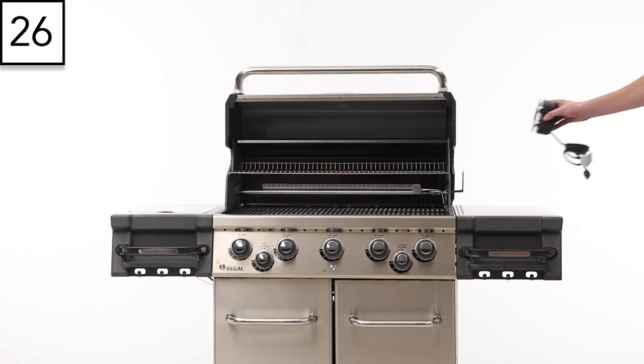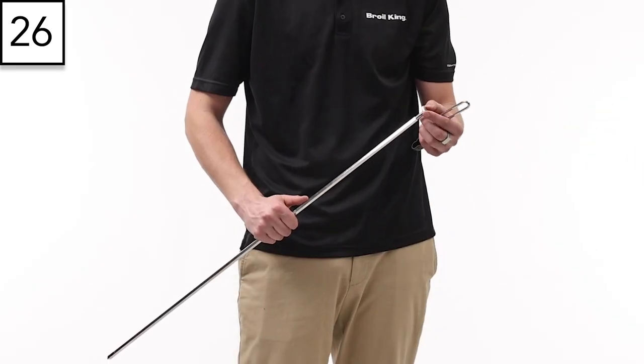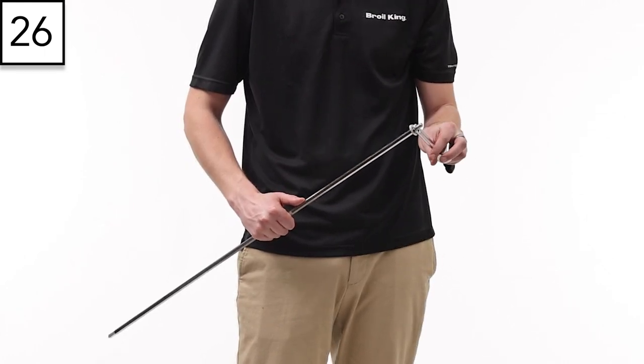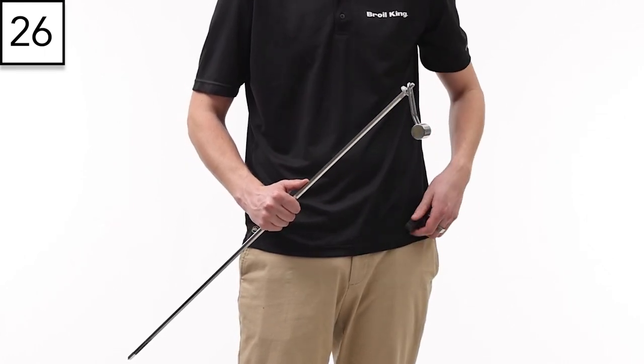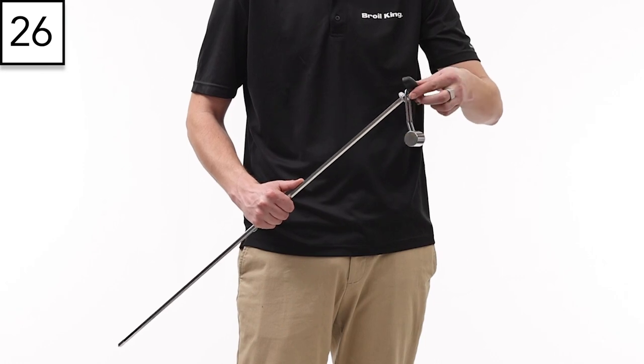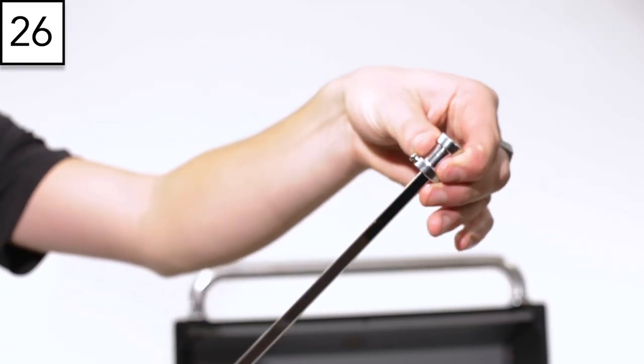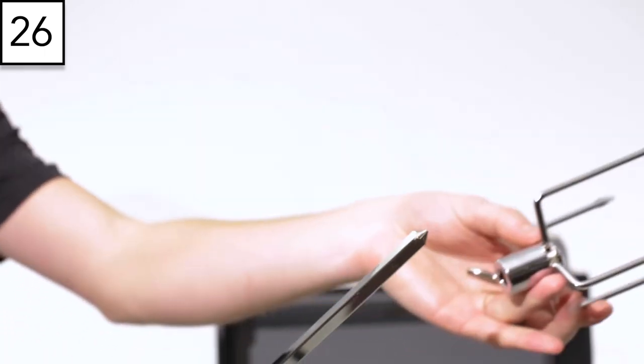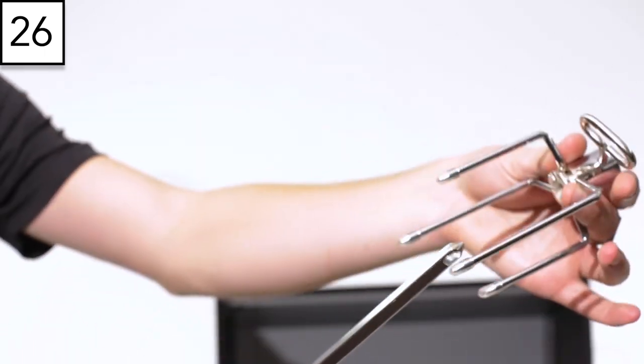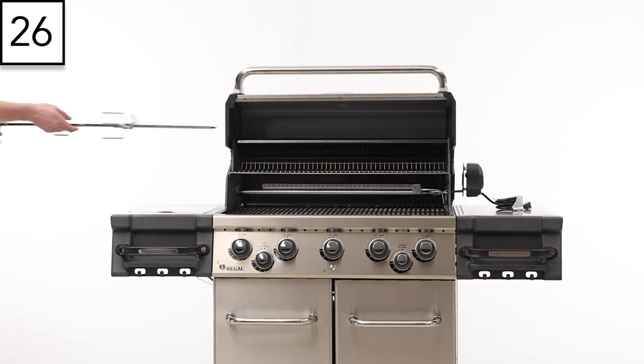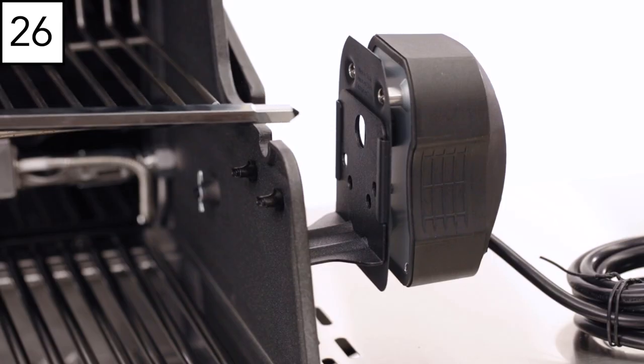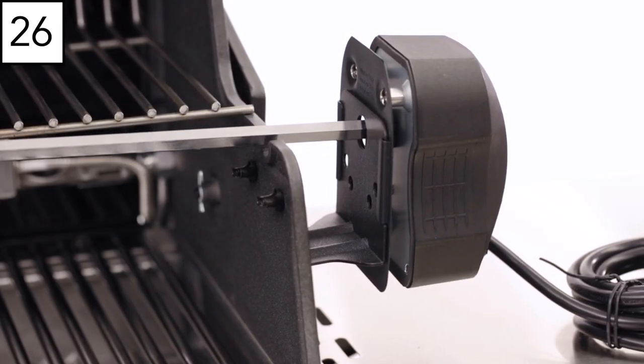Now slide the rotisserie motor onto the bracket. To assemble the rotisserie rod, thread the washer onto the rod. Put the counterbalance weight onto the spit rod and secure it with the handle. Slide the collar onto the spit rod, then the two forks. Install the assembled rod onto the gas grill, with the open end going into the motor.